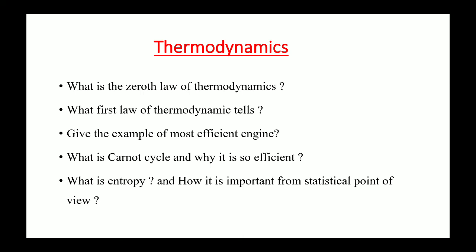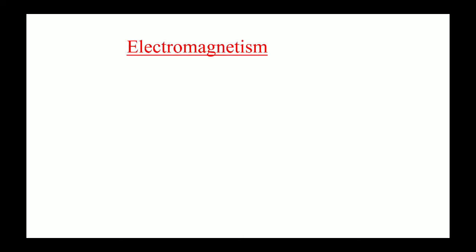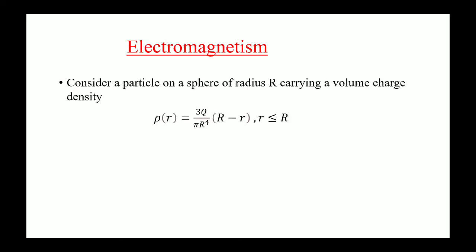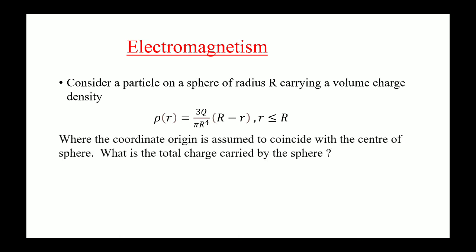Now, questions from electromagnetism. He gave a problem: Consider a particle on a sphere of radius R carrying a volume charge density ρ(r) = (3q)/(πR⁴) × (R - r) for r ≤ R, where the coordinate origin is assumed to coincide with the center of the sphere.